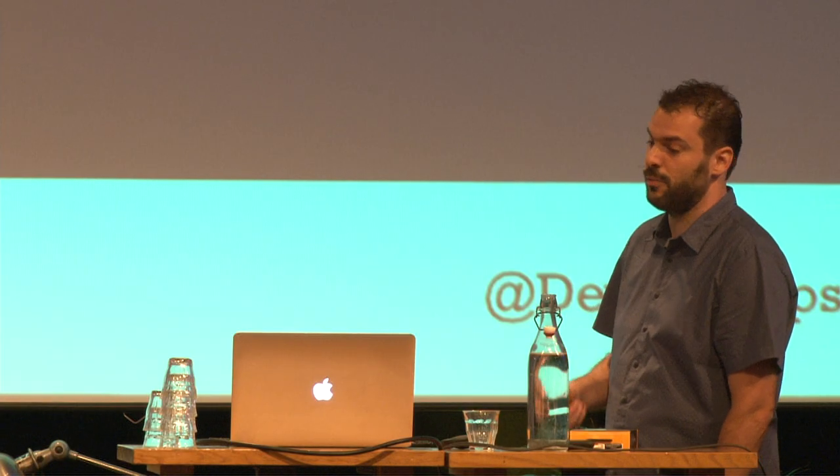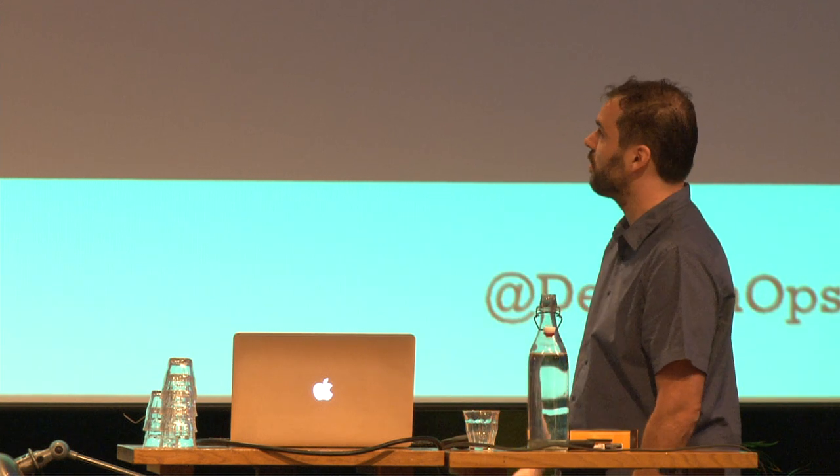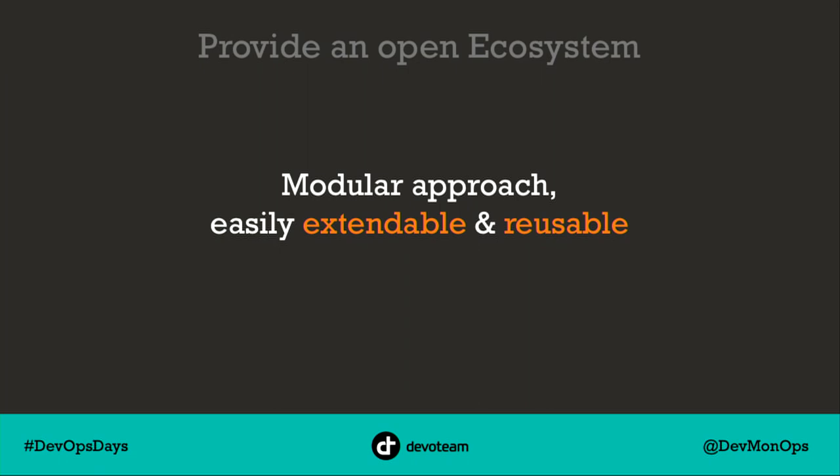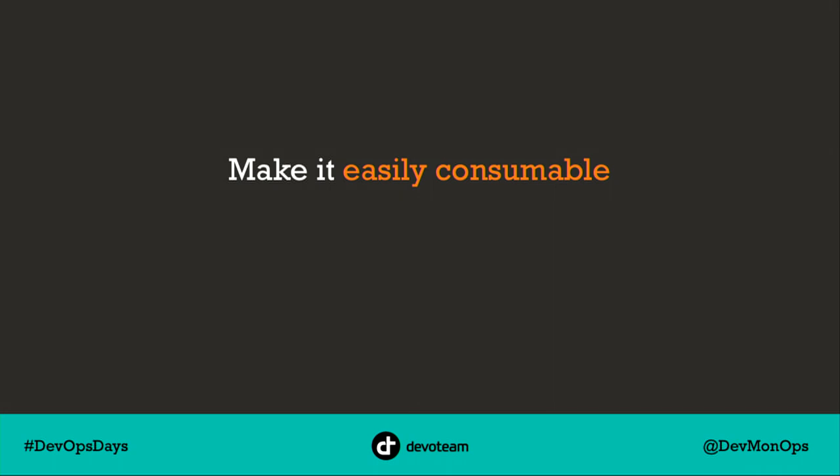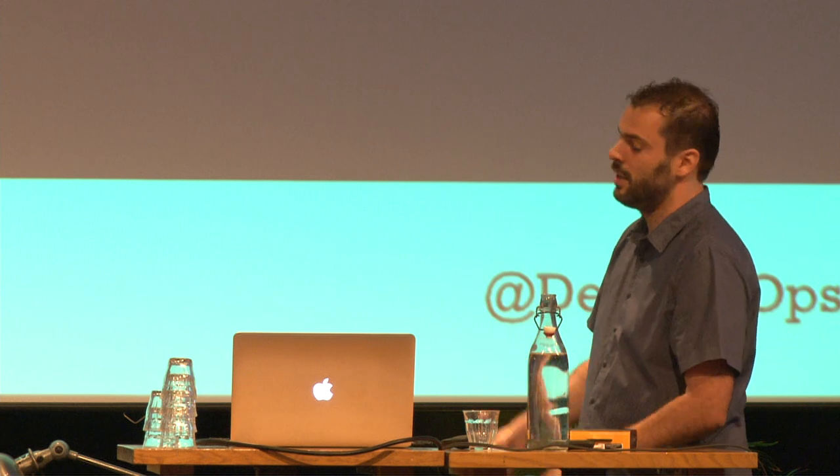To do that, you have to provide an open ecosystem where teams can easily use your services and your platform. Your platform must be modular, easy, extendable, and reusable instead of tightly coupled. Make it easy consumable — APIs, services. Don't work with tickets that your team is going to type in all this stuff. The teams nowadays are smart enough to do it themselves. Give them good help and support and they will survive.